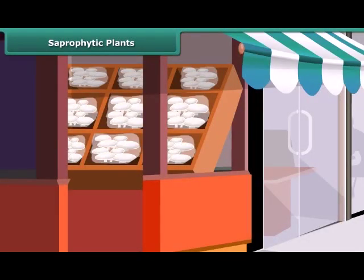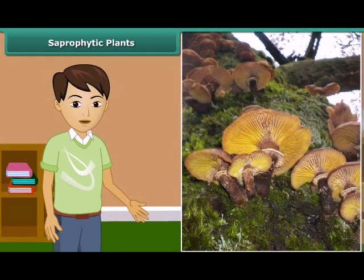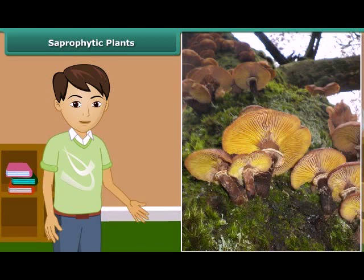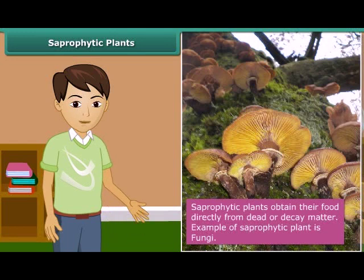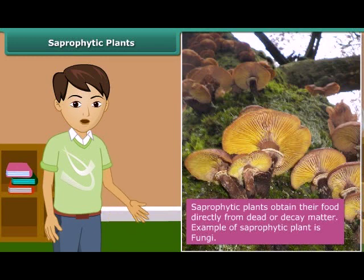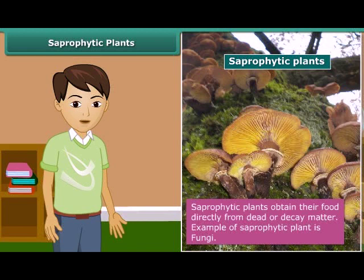When you go to a vegetable shop, you might have seen packets of mushrooms. Besides that, sometimes you may have also seen fluffy umbrella-like patches growing on rotting wood during rainy season. These organisms are commonly called fungi, and they get their nutrition from dead and decaying matter. To get their nutrients, they secrete digestive juice and convert it into a solution. This mode of nutrition in which organisms take in nutrients in solution from dead and decaying matter is called saprotrophic nutrition, and organisms which use this mode are called saprotrophs. Thus, fungi are saprotrophs.